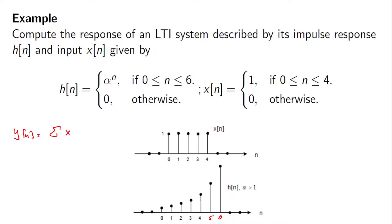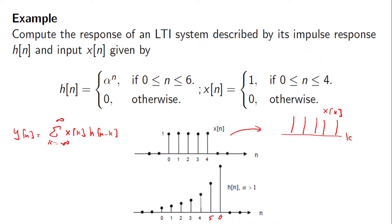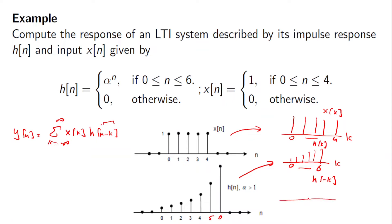The output y[n] is computed by the convolution sum: the sum of x[k]·h[n−k] where k runs from minus infinity to infinity. Converting x[n] to x[k] leaves the range 0 to 4 unchanged. For h[k], we have an increasing function from 0 to 6, but h[−k] flips it so we get a value at minus 6 on the other side.